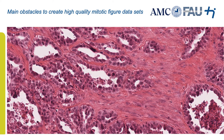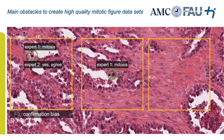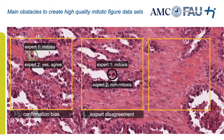The main obstacles towards creating a high-quality mitotic figure dataset are: first, confirmation bias, where a secondary expert simply agrees with the first expert's annotations; second, expert disagreement, which we address by class-blinding the annotation so the second expert does not know whether an annotated object was mitosis or non-mitosis; and third, undetected events, where the first expert misses mitotic figures despite screening the image multiple times.